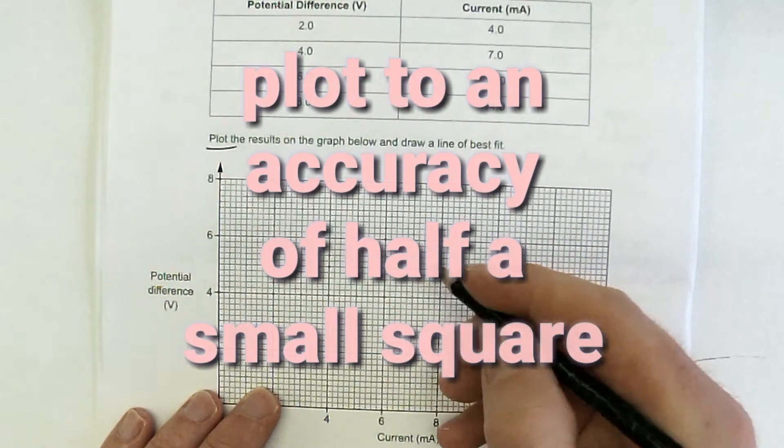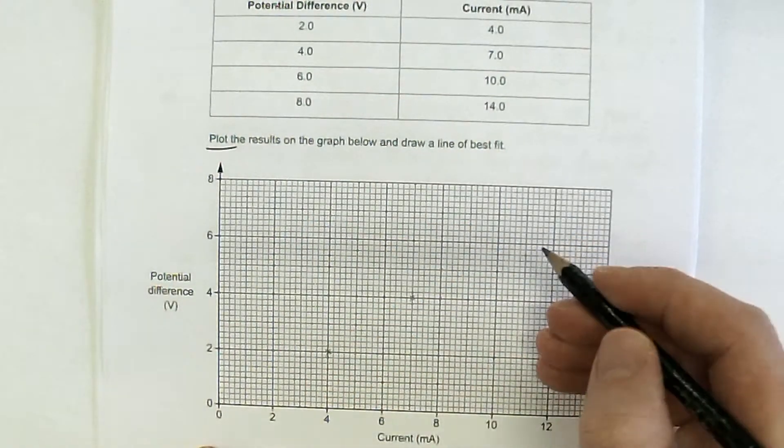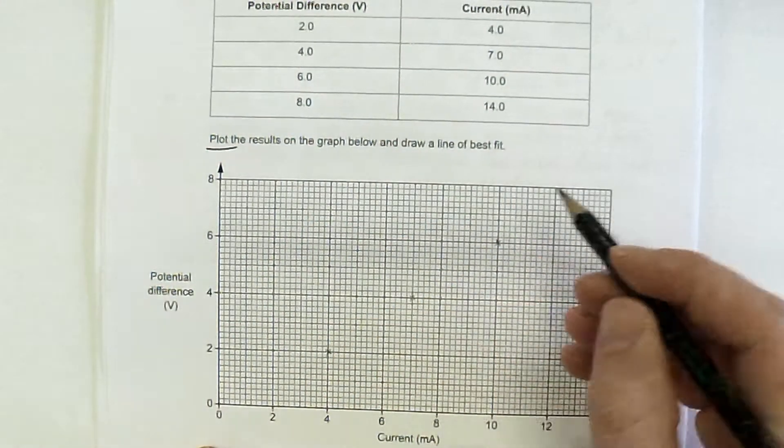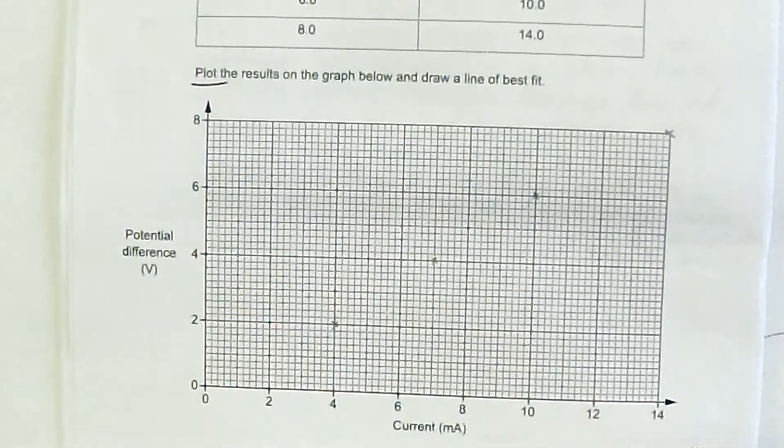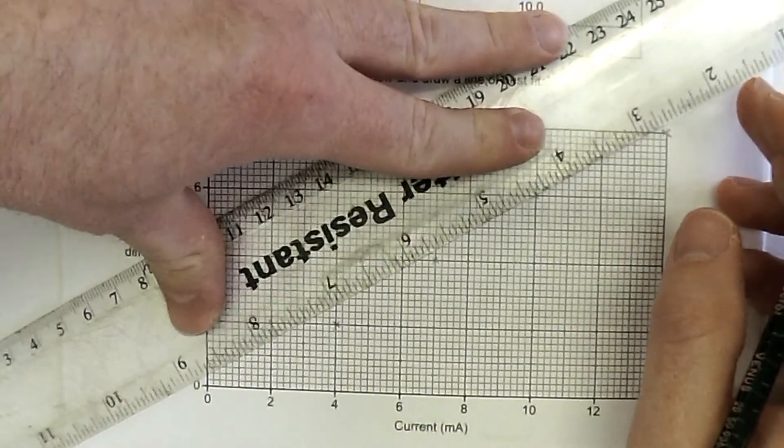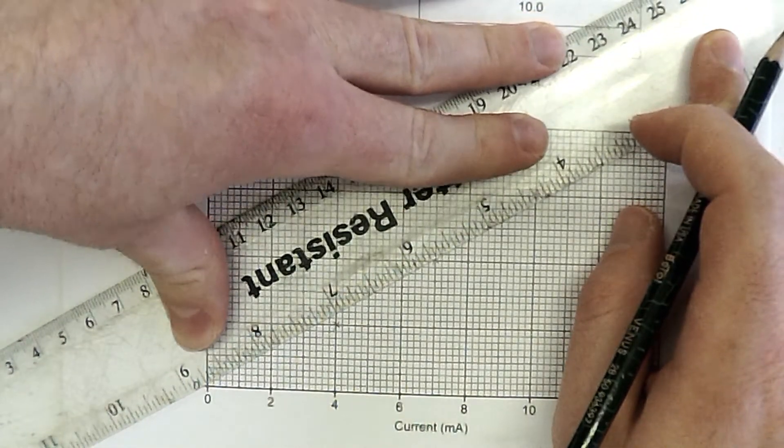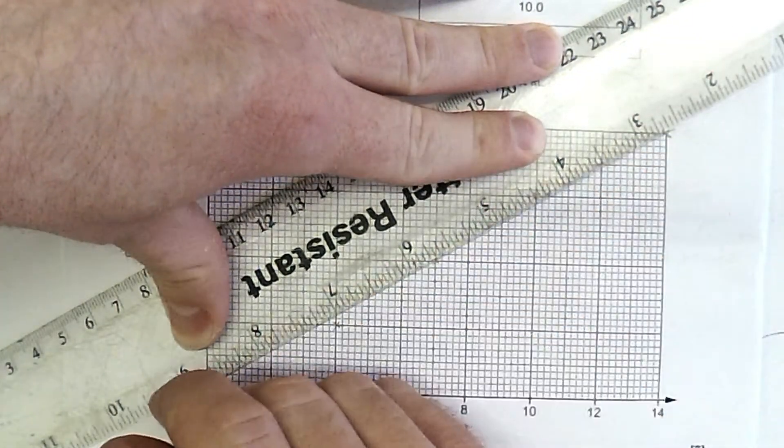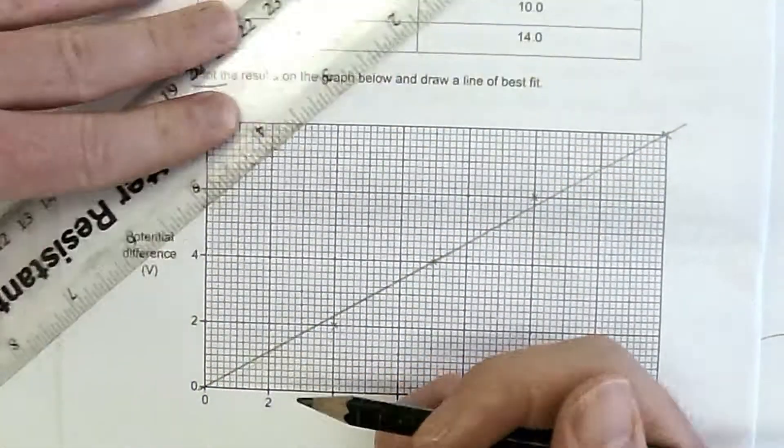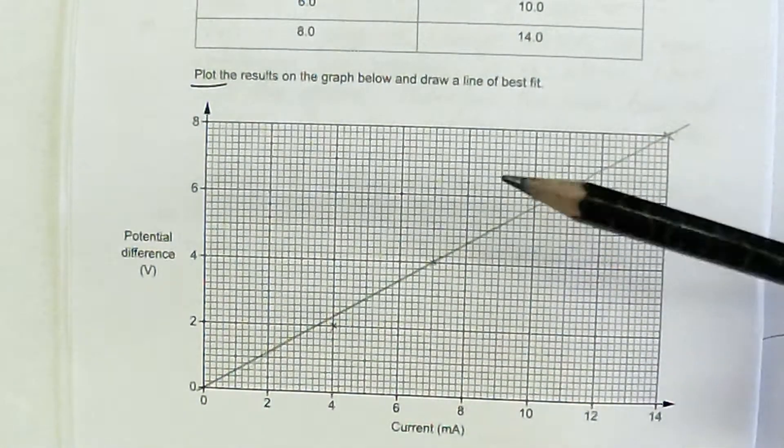4 is 7, 6, 10, and 8, 14. So that is a shock straight line of best fit. There is no dubiety that that should be exactly there. So that is a straight line of best fit because we know it's going to be an Ohmic resistor.